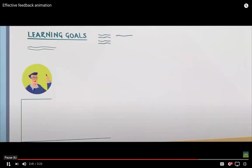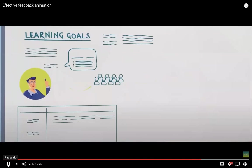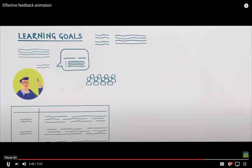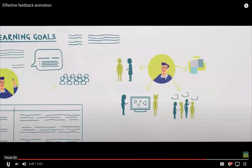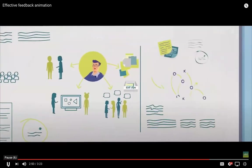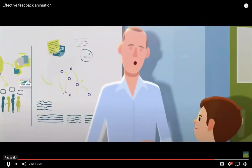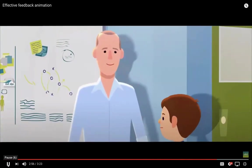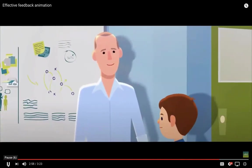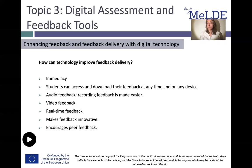Teachers can develop their feedback practices by communicating clear learning goals, trialling activities that provide evidence of student learning, planning for task, process and self-regulated feedback, checking that students understand and act on the feedback provided, and working with colleagues to develop and refine feedback practices. So, effective feedback is the feedback that clarifies what good student performance is and facilitates a dialogue around learning. It guides students on how to improve their learning.